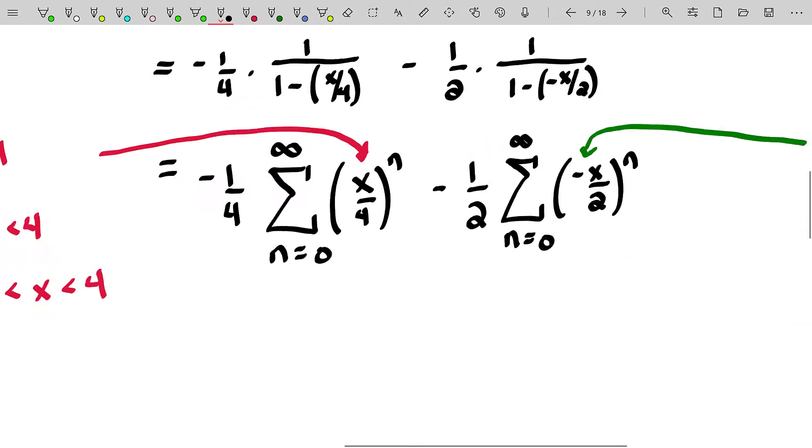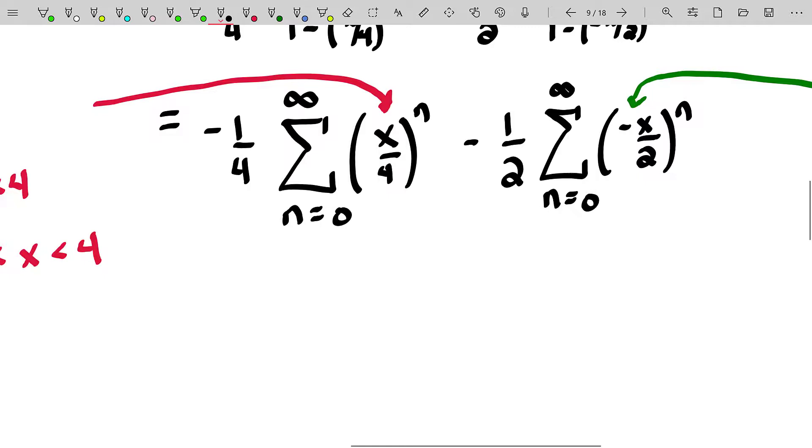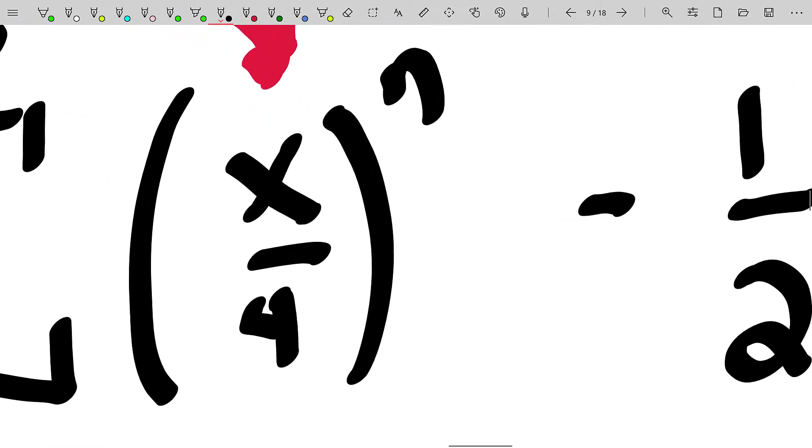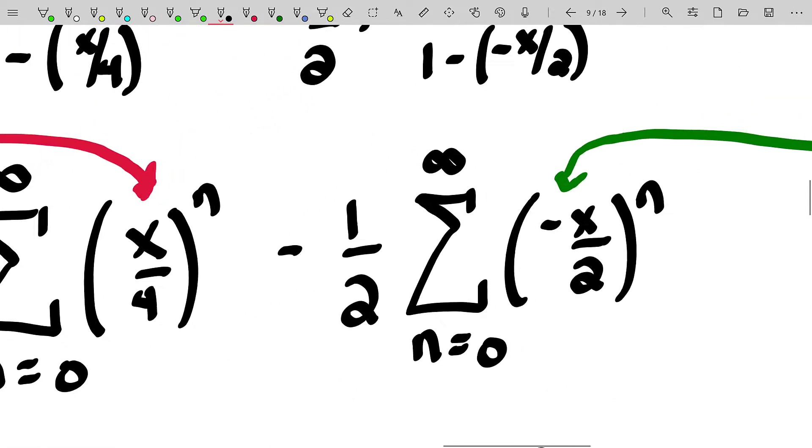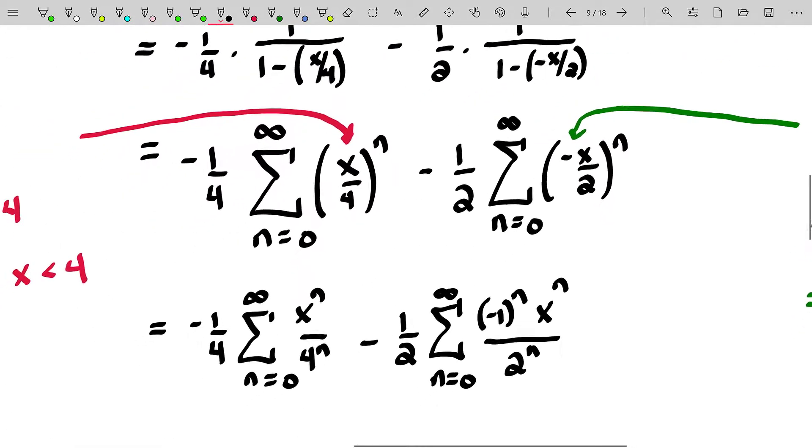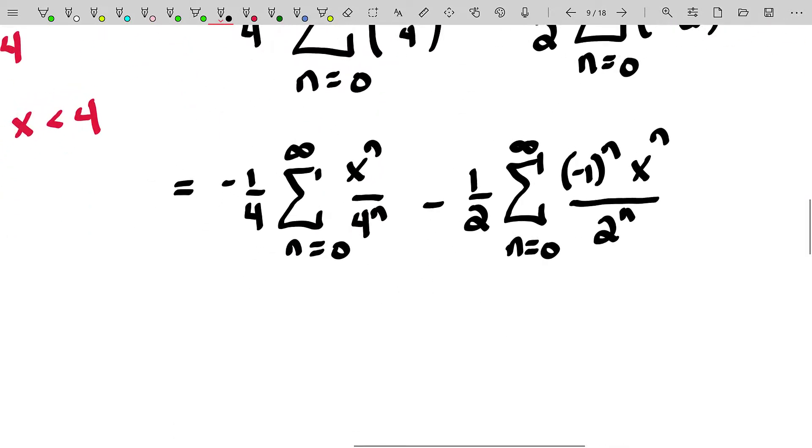Just minor cleanup here. There are times when you can do some major cleanup on these, but this is not one of those times. As you can see, I basically pulled apart all of the factors within those powers and applied the powers to each of the resulting factors. That is, I wrote this fraction here as X to the nth over 4 to the nth. And this fraction right here I wrote as negative 1 to the nth X to the nth over 2 to the nth.